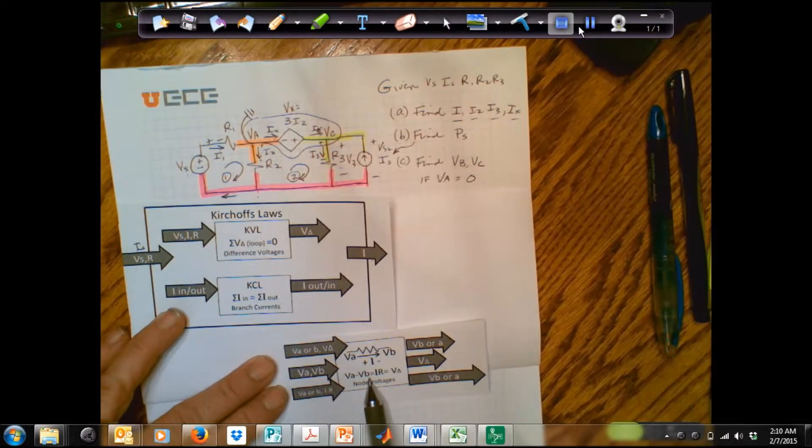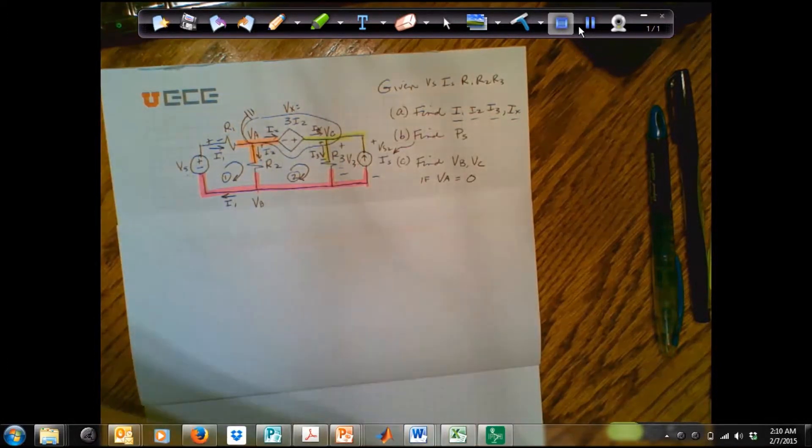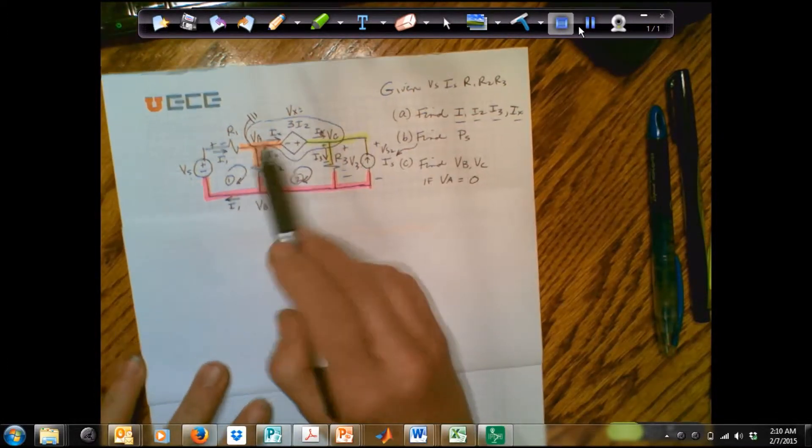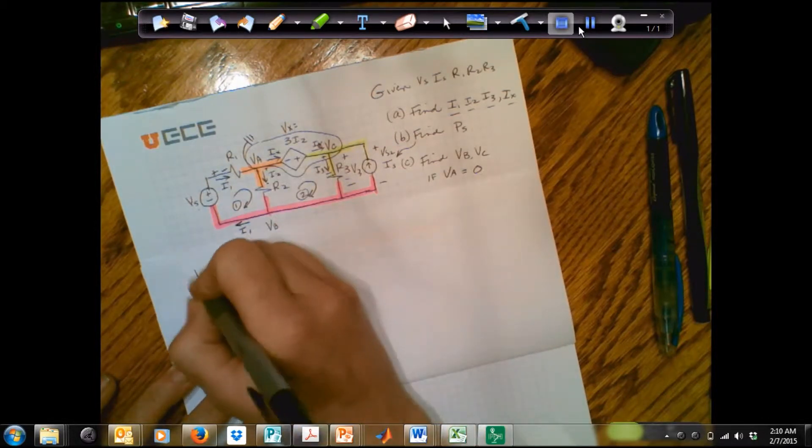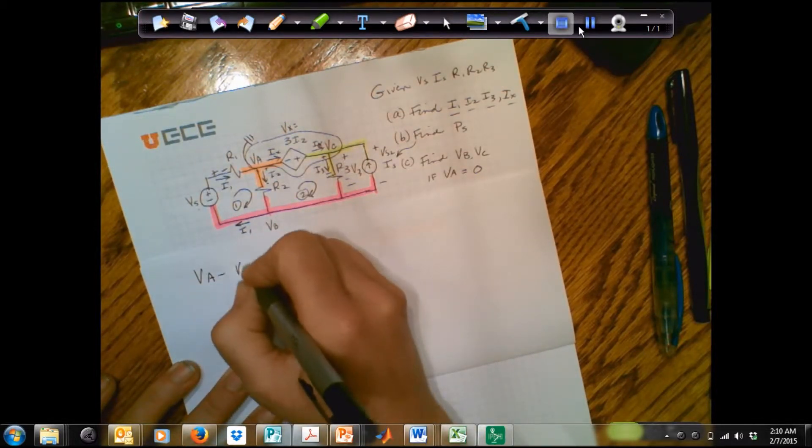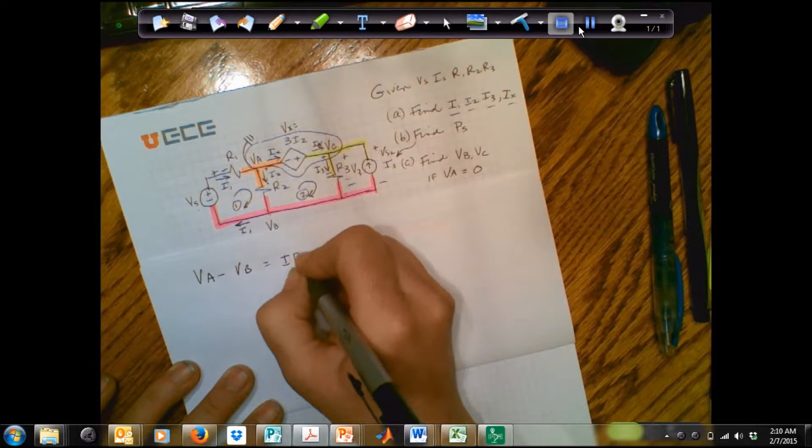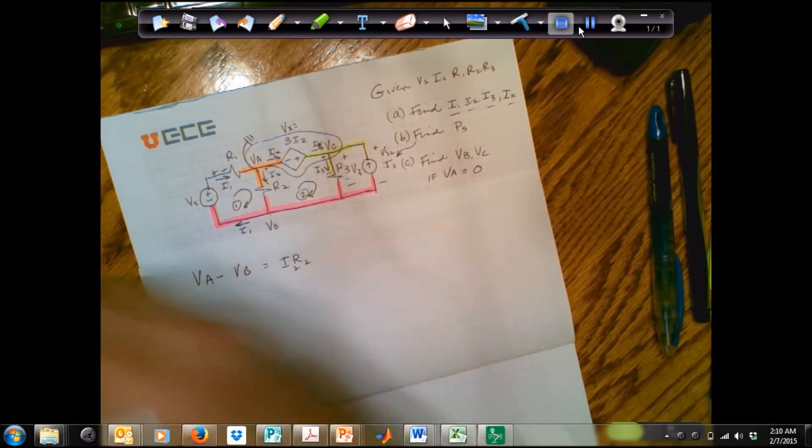I'm going to use this equation, VA minus VB is equal to IR. So let's see. Let's suppose that I have this node, VA minus VB is equal to I times R. This is I times R2.